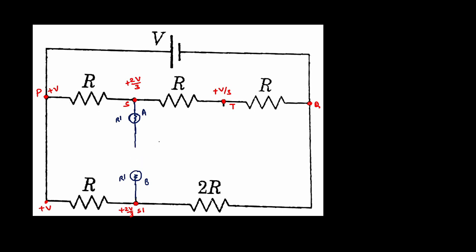Now suppose if I ignore this branch and first consider voltmeter A connected in series with another identical voltmeter C, and connect like this to the point T — then we know that these two resistors R dash, corresponding to A and R dash corresponding to C, are connected between points S and T. There are different potentials, so there will be a flow of current. Let us say that a small amount of current I flows from point S via these voltmeters to point T. So I amount of current flows through voltmeter C as well.